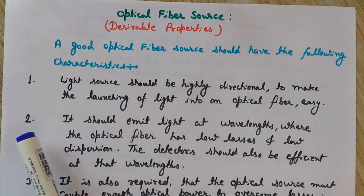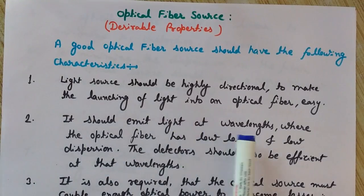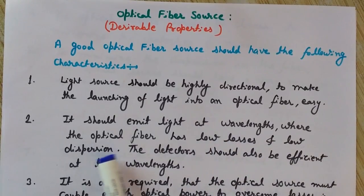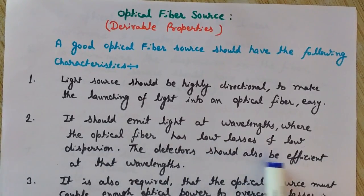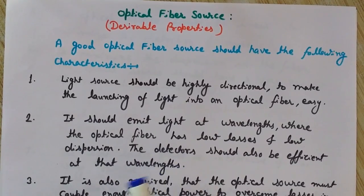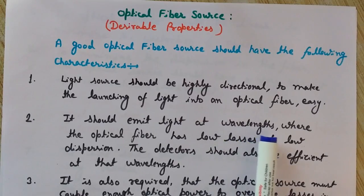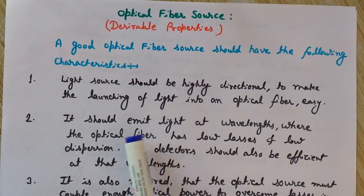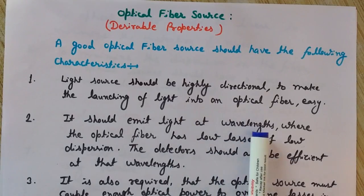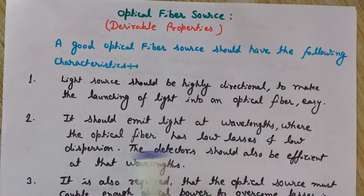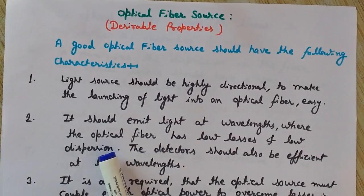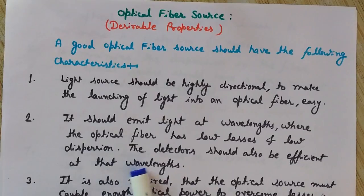The second property is it should emit light at wavelengths where the optical fiber has low losses and low dispersion, and the detectors should also be efficient at those wavelengths. Losses and dispersion — dispersion means the spreading of light while traveling — are dependent on the wavelength being used. So the light source should emit light at wavelengths where there are low losses and low dispersion.